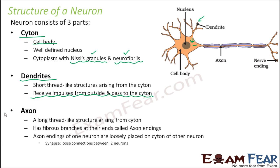The last part is the axon. It is a long thread-like structure arising from the cytoplasm. Both dendrites and axons are extensions of the cytoplasm — it is just that dendrites are short extensions and the axon is a very long thread-like structure, quite long compared to dendrites. The axon has fibrous branches at their endings called axon endings, also known as nerve endings.